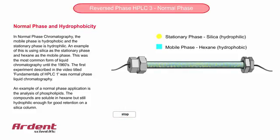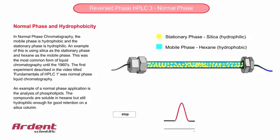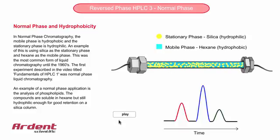In normal phase HBLC, the stationary phase is hydrophilic and the mobile phase is hydrophobic. The roles of the mobile and stationary phases have been defined and explained in the module Fundamentals of HBLC, which is the first module in this HBLC Essential Suite. So, if you're unsure about these, you might want to refer back to that module.